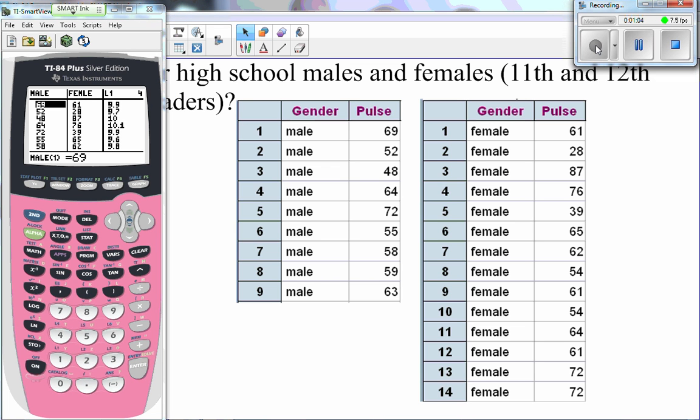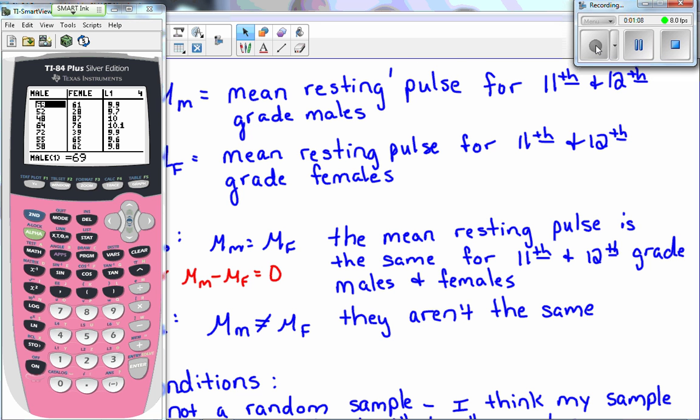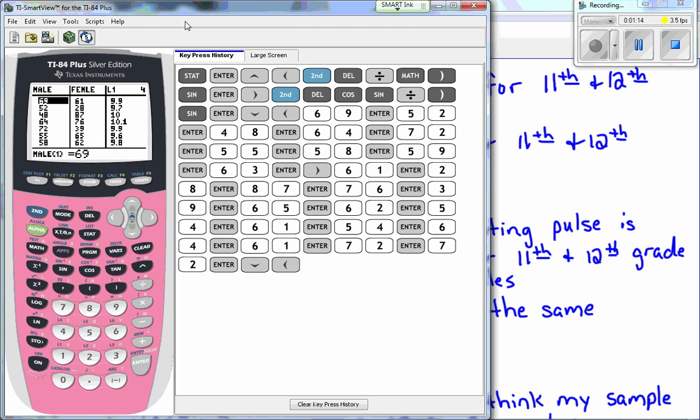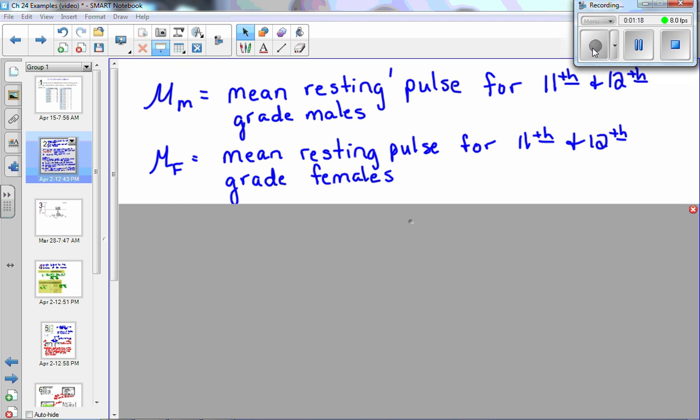So you should have paused that and entered all that information. Now what we're going to look at is actually how to answer the question, is there a difference? First of all, I'm going to define the two means that I have. So μ sub m is going to represent the mean resting pulse for 11th and 12th grade males, and μ sub f represents the mean resting pulse for 11th and 12th grade females.